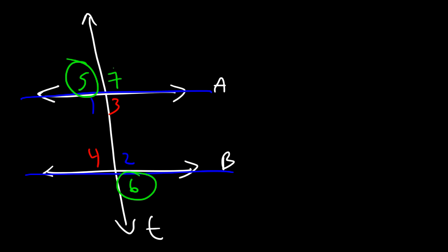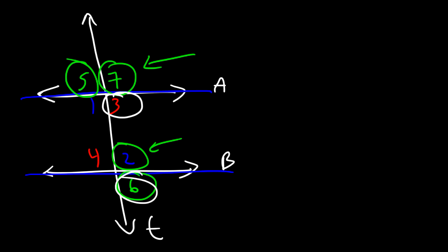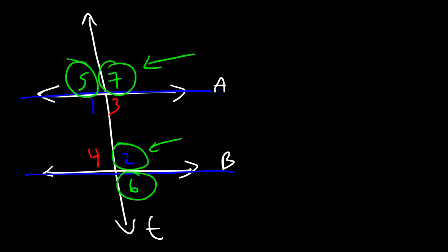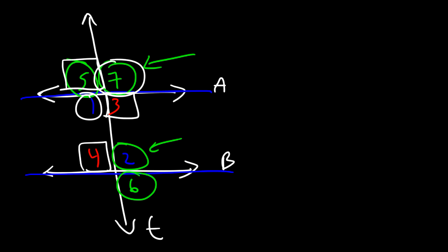Consecutive interior angles are also known as same-side interior angles. Angles 7 and 2 are corresponding angles and they're congruent. Angles 3 and 6 are also corresponding angles, and 5 and 4 are corresponding angles — all congruent. Angles 1 and 7 are vertical angles and congruent; 5 and 3 are vertical angles; 4 and 6 are vertical angles and congruent.